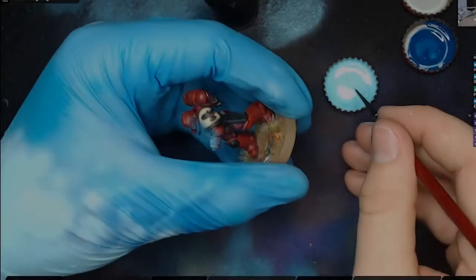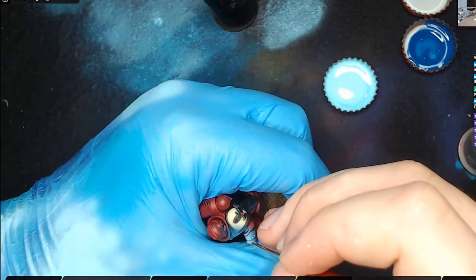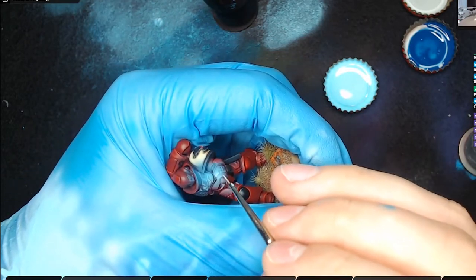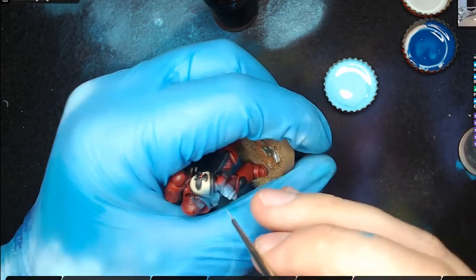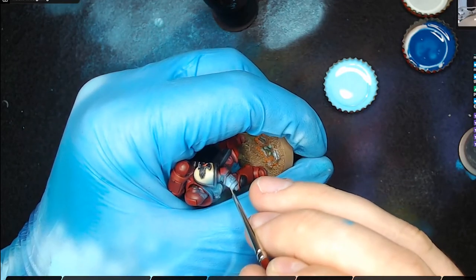So on the Primaris Marine what we can do, we can do the same on the gun, but on the actual figure itself we can highlight some of the edges that are most protruding, such as the brace on the back of the arm, the edge of the wrist, and then we're going to do a little bit on the chest just to show where it is glowing, where it is the brightest.